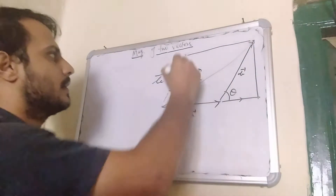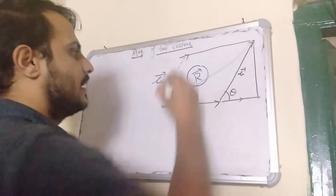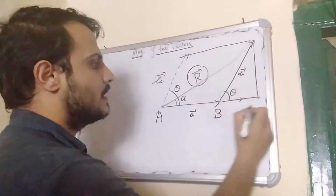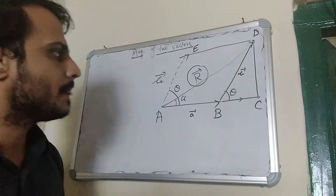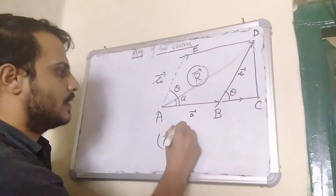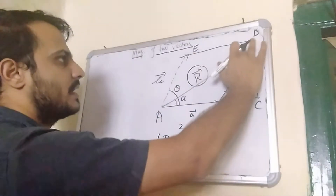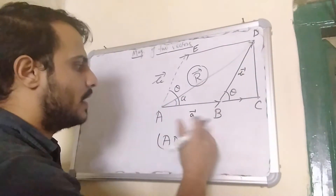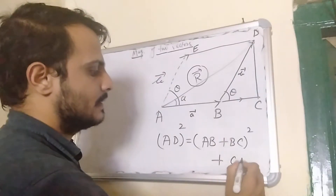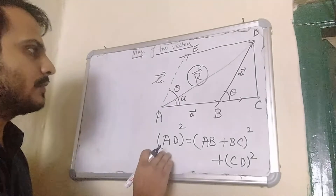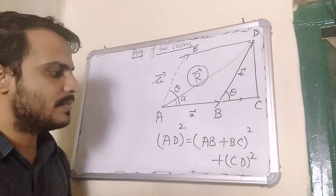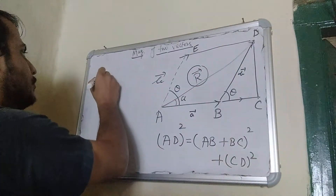We perform a parallelogram-type setup. We find the magnitude of r using trigonometry. I label some points: a, b, c, d, and e. I will use the Pythagorean theorem here. So resultant squared, that is AD squared, is equal to AC squared. But AC is formed by AB plus BC, plus the perpendicular squared, that is CD squared. I have used this Pythagorean theorem: AD² = (AB + BC)² + CD². Now I put in the values of AD, AB, BC, and CD to get the resultant. AD is our resultant, so the left-hand side is r².